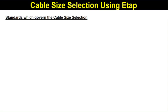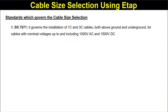The standards that govern cable size selection are given here. The first is BS 7671, which governs the installation of single-core and three-core cables both above ground and underground, for cables with nominal voltage up to and including 1000 V AC and 1500 V DC.